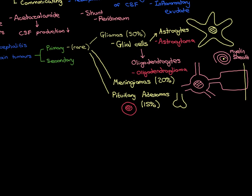Examples of anterior pituitary hormones include thyroid-stimulating hormone, adrenocorticotrophic hormone, luteinizing hormone, follicle-stimulating hormone, and human growth hormone. If you get a brain tumour originating from these cells of the anterior pituitary, that is called a pituitary adenoma — 'adenoma' referring to a tumour of glandular tissue. That is the third most common form of primary brain tumour.